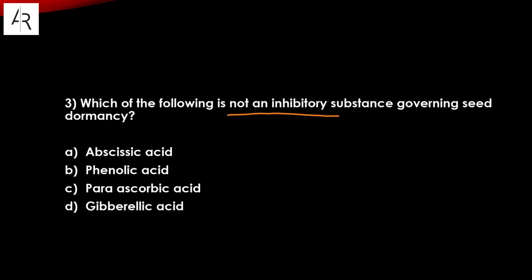Question number three: which of the following is not an inhibitory substance governing seed dormancy? Options are abscisic acid, phenolic acid, parasorbic acid, and gibberellic acid. This will be directly answered — gibberellic acid is the answer, as it is not an inhibitory substance.